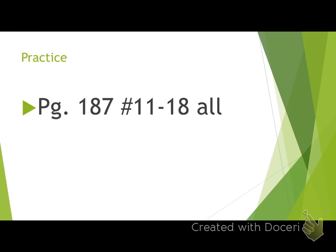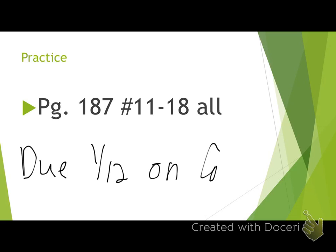Here's our assignment: page 187, numbers 11 through 18 all. This will be due Tuesday the 12th on Canvas. Don't forget, yesterday's assignment is due on Monday on Canvas, and today's assignment is due on Tuesday on Canvas. Make sure you get the correct heading on your paper — name, date, period, assignment in the upper right-hand corner. Does anyone have any final questions before I stop the recording?